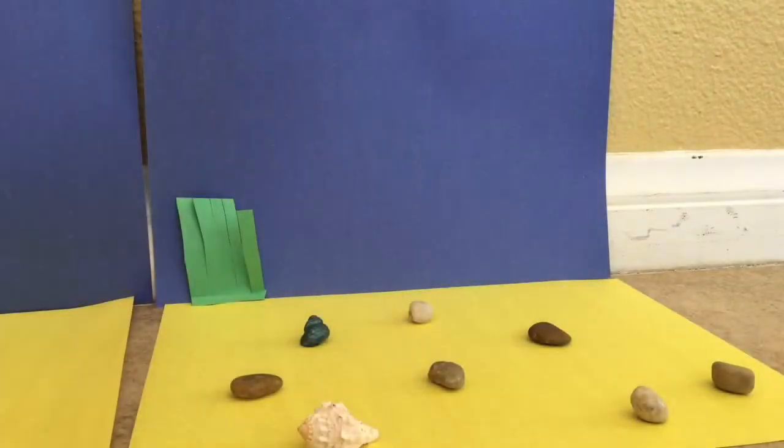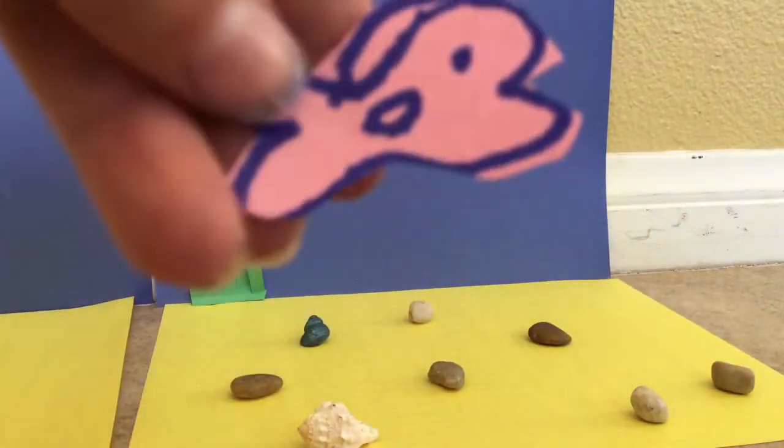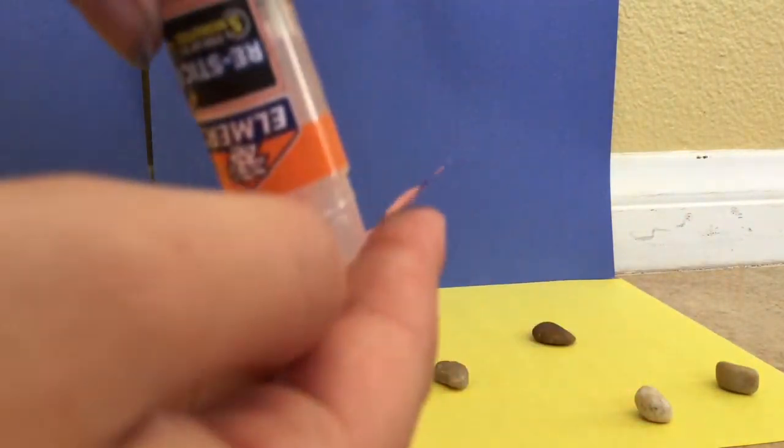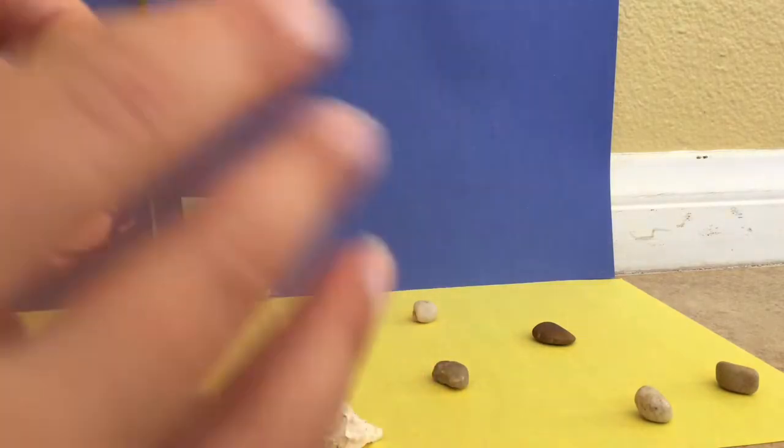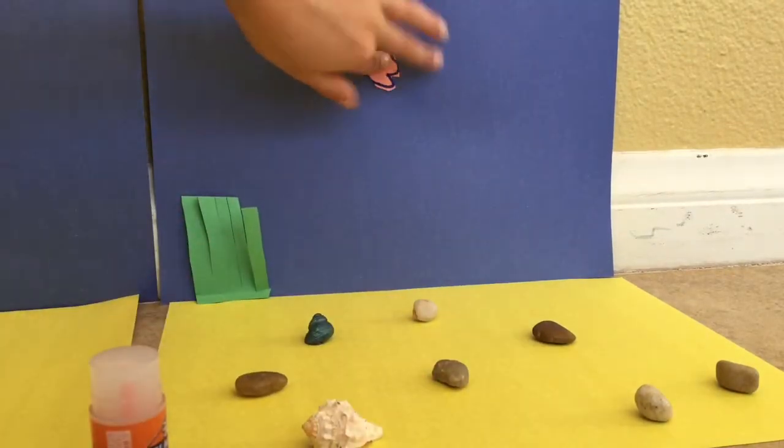So then I'm going to be making a fish out of pink paper, then I'm going to glue it to the paper, the blue paper. You can make many more.